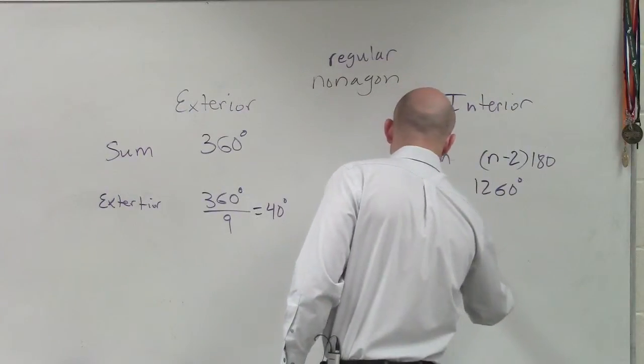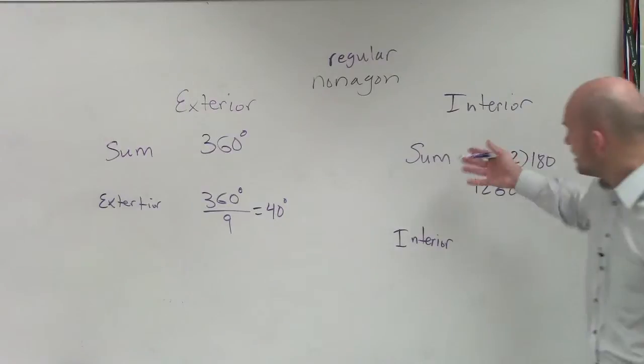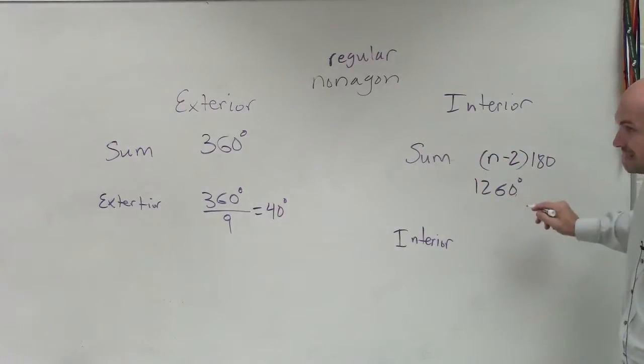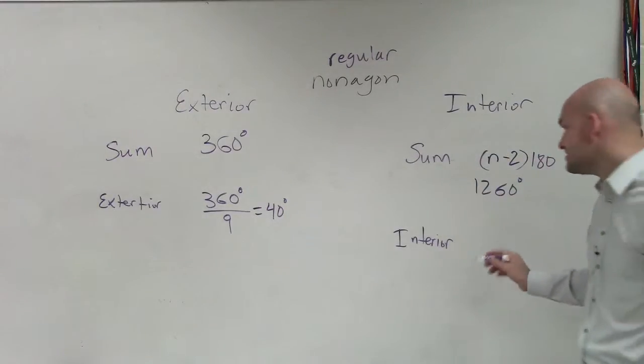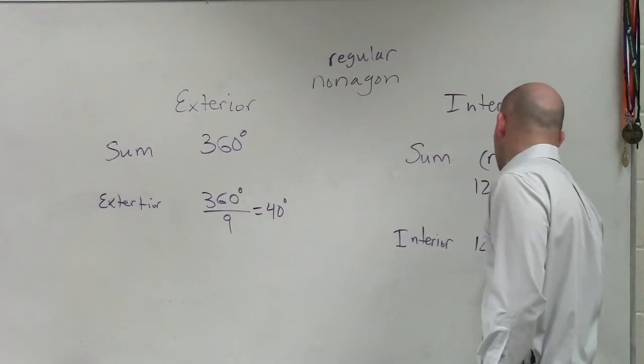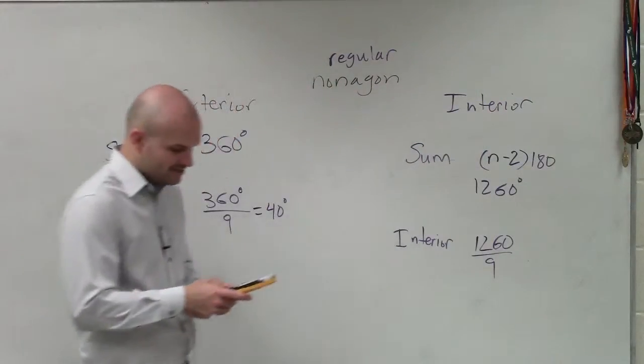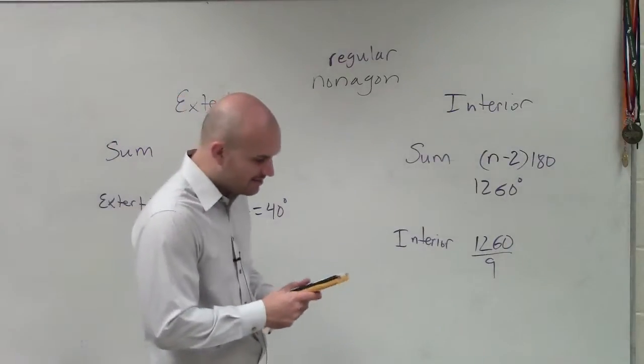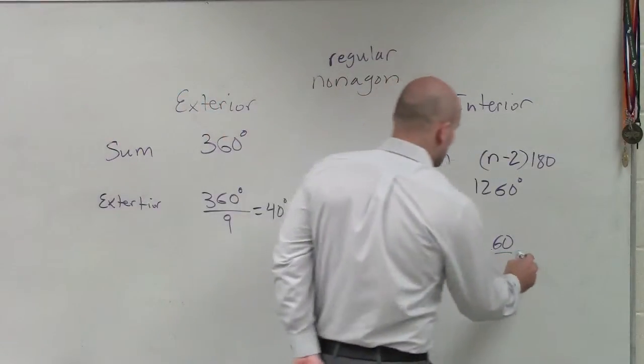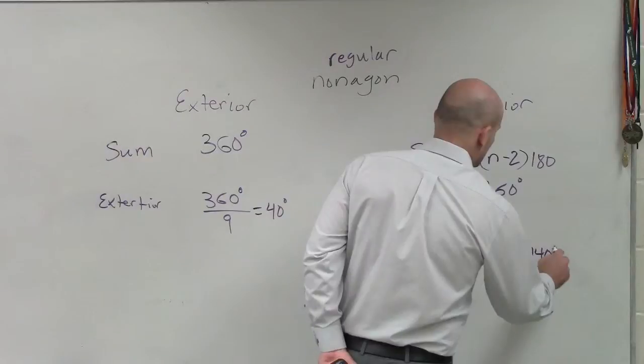if I just want to find the sum, I'll find the sum use the formula. 1,260. But to find the interior, I take the sum and divide it by nine. So 1,260 divided by nine is equal to 140 degrees.